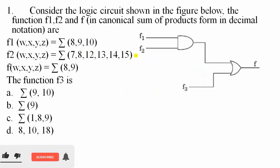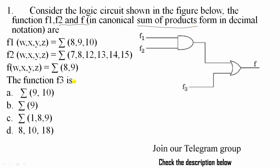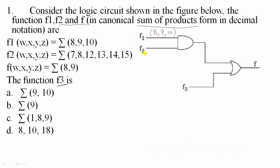Moving on to question number 1: consider the logic circuit shown in the figure below. The functions F1, F2, and F are given in terms of canonical SOP. They are asking what is the value of F3. We know that F1 is given as minterm 8, 9, 10. F2 is 7, 8, 12, 13, 14 and 15. The output they are telling is 8, 9. The output of an AND gate is the common elements of the inputs.